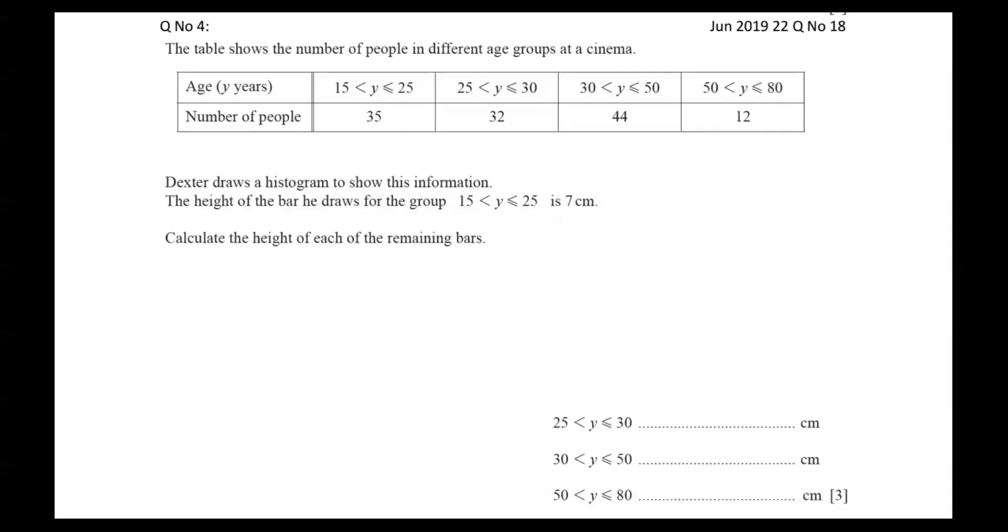Bismillah ar-Rahman ar-Rahim. The topic is statistics and the paper is June 2019, variant question number 18. We have given a table with number of people in different age groups mentioned.